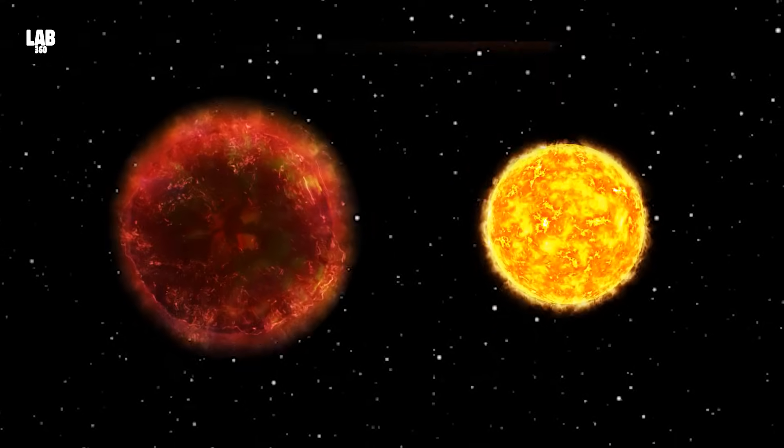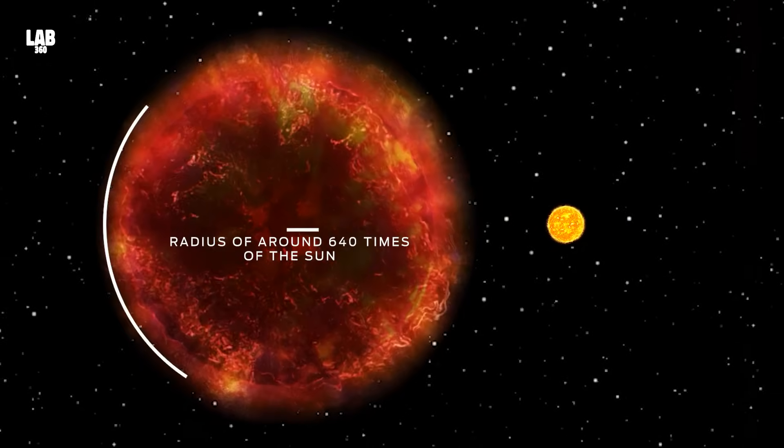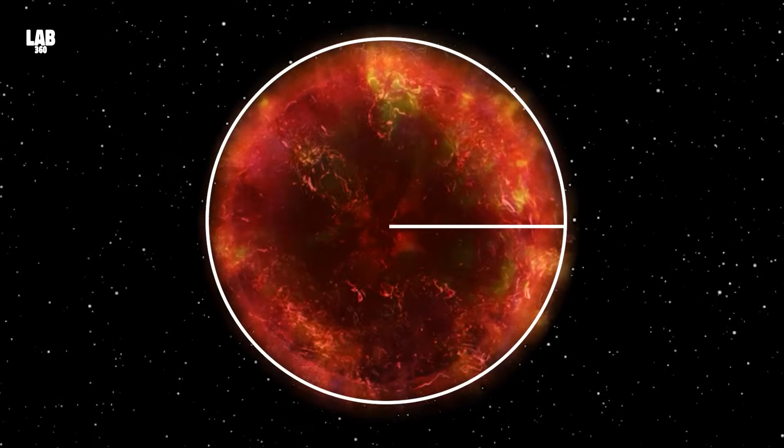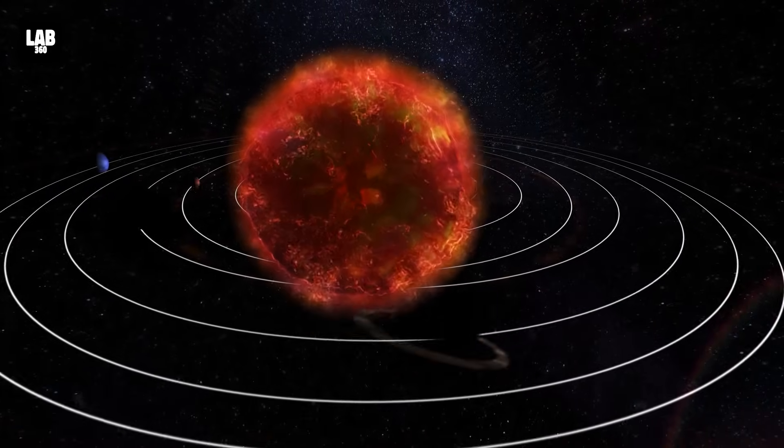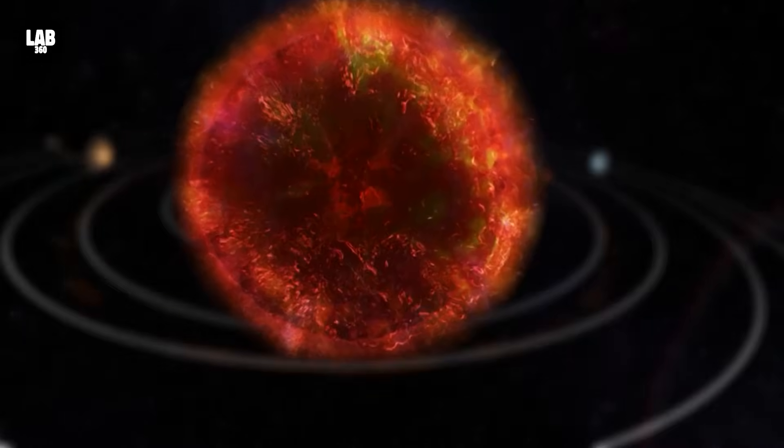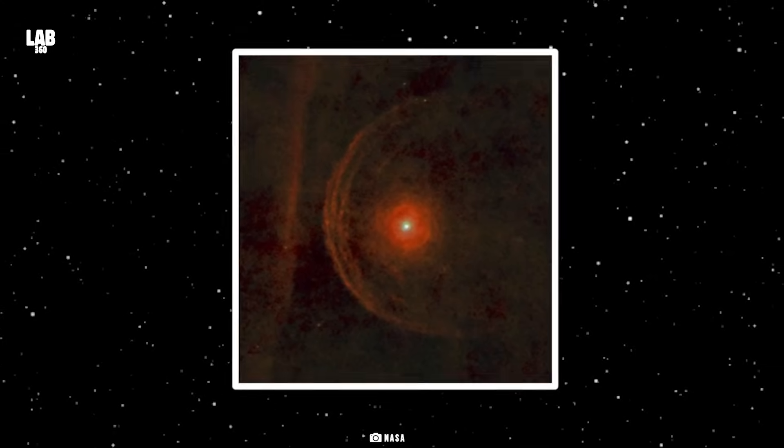This supergiant star has a radius of around 640 times that of the Sun. This means that if we were to replace our Sun with this giant star, it would spread beyond the asteroid belt and engulf the orbits of Mercury, Venus, Earth, and Mars. That is how massive and full of life this star is.